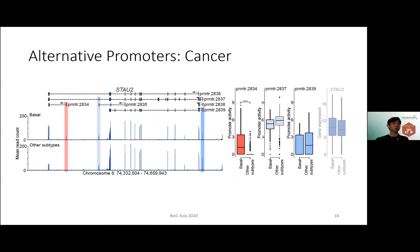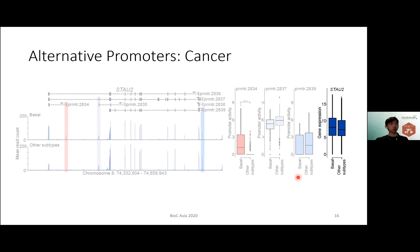We also found that promoter usage is specific to cancer subtype. The figure on the left shows the mean read count at the STAT2 locus for the basal subtype of breast cancer compared to all other subtypes of breast cancer, with the three most active promoters highlighted. The proximal promoter highlighted in red displays subtype-specific activity for basal breast cancer samples, while the other two promoters show comparable or high activity levels in all the subtypes. Again, there was not much difference in the overall expression of STAT2 between the basal subtype and the rest of the subtypes, showing that cancer tumors with different molecular characteristics can be associated with alternative promoter usage.